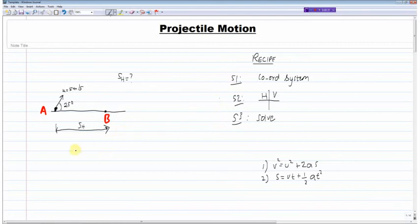In the example here I have a particle starting at point A. It's thrown up in the air with an initial velocity of 5 metres per second at an angle of 25 degrees. It lands at point B and we're trying to calculate the horizontal displacement travelled by this particle.